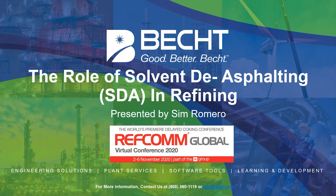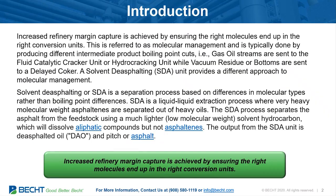With that, I'd like to get started. The first key takeaway is that to increase a refinery's margin capture, you have to ensure that the right molecules are going to the right places on the right conversion units. This molecular management approach is typically done in a refinery environment by cut points and fractionation. In a refinery, we cut in the crude units to make naphtha, diesel, and gas oil.